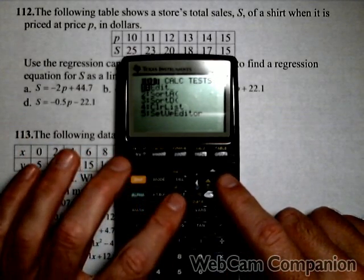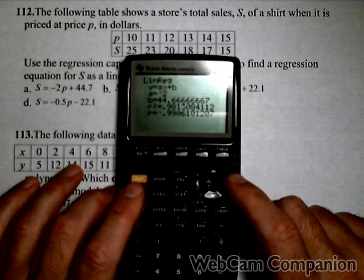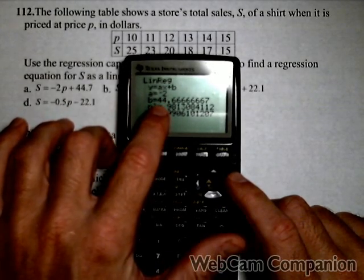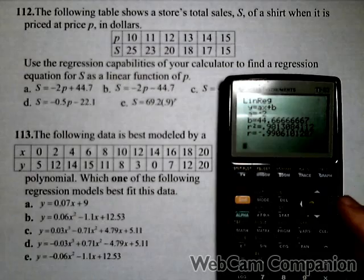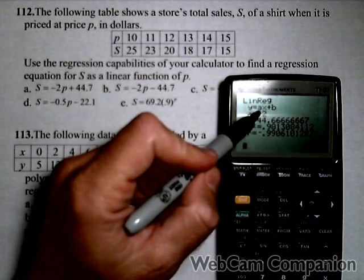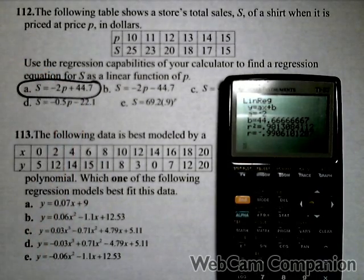Now I'm going to go back to stat and calculate my linear regression. And there's my model. It says I have a slope of negative two and a y-intercept of 44.7. The negative's on the slope, the positive's on the B. So it's going to be A.